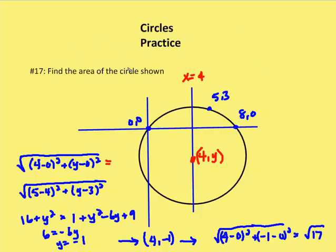The next problem asks us to find the area of a circle that intersects the points (0, 0), (5, negative 3), and (8, 0). We also know that the line x equals 4 runs through the center of the circle. Since the center lies on x equals 4, the x-coordinate of the center is 4, giving us the center as (4, y).